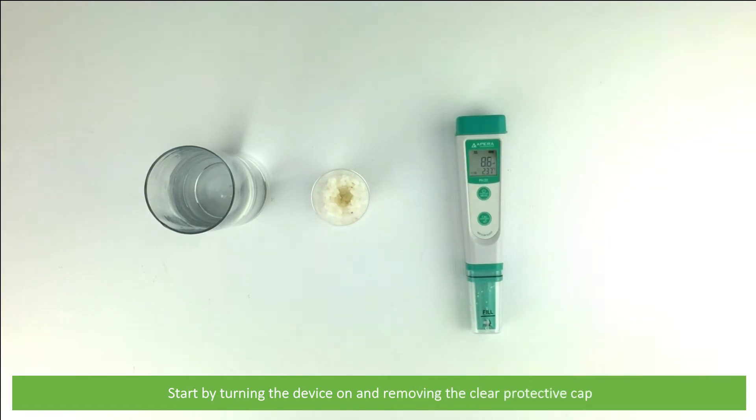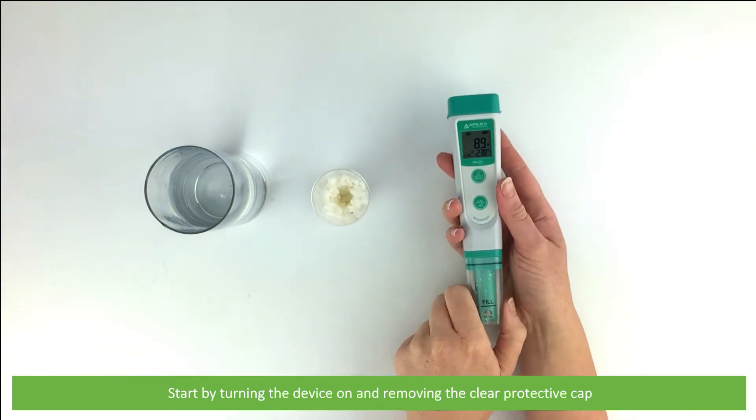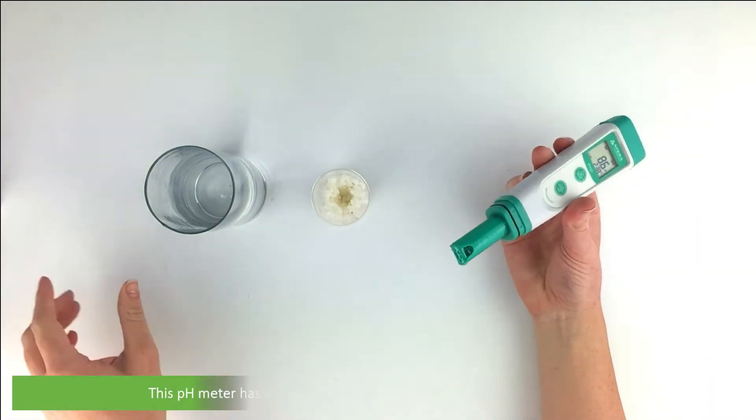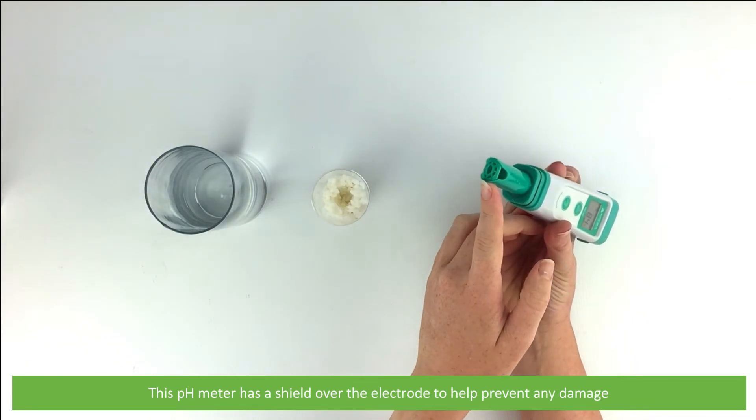Start by turning the device on and removing the clear protective cap. This pH meter has a shield over the electrode to help prevent any damage.